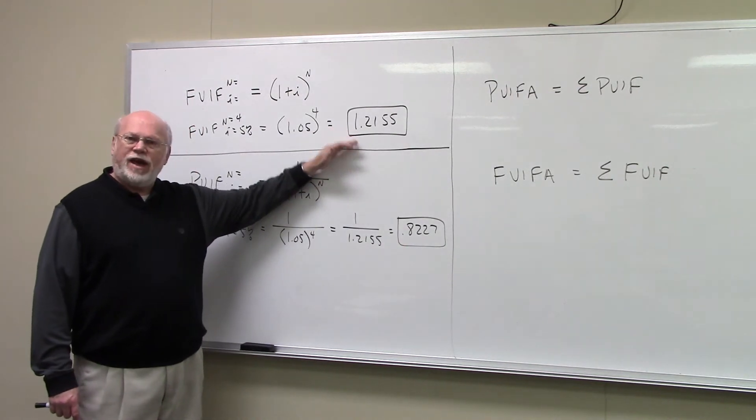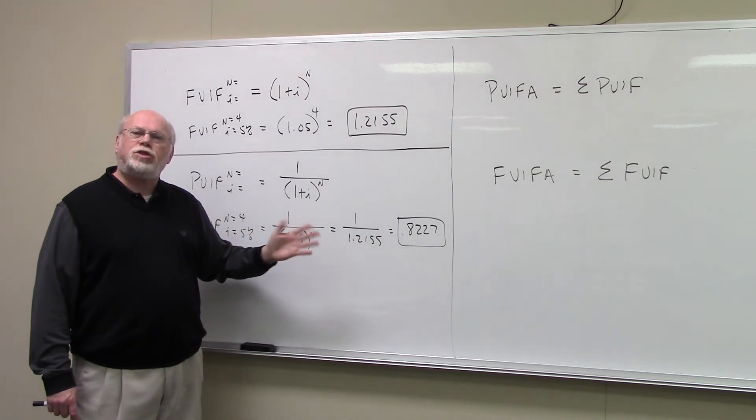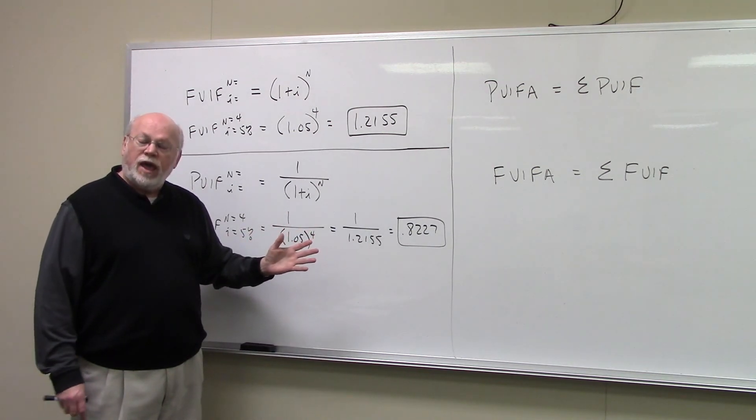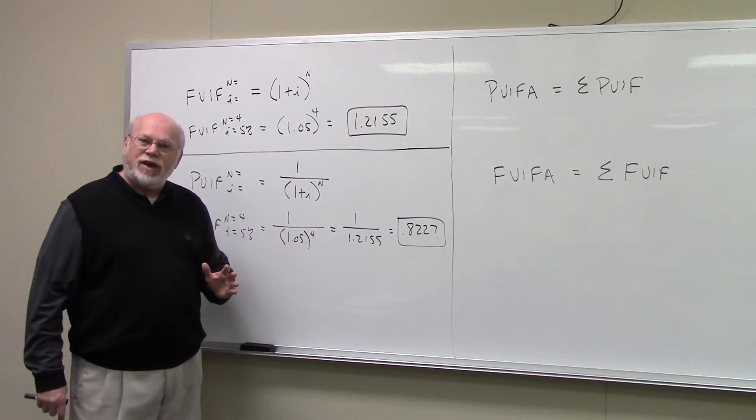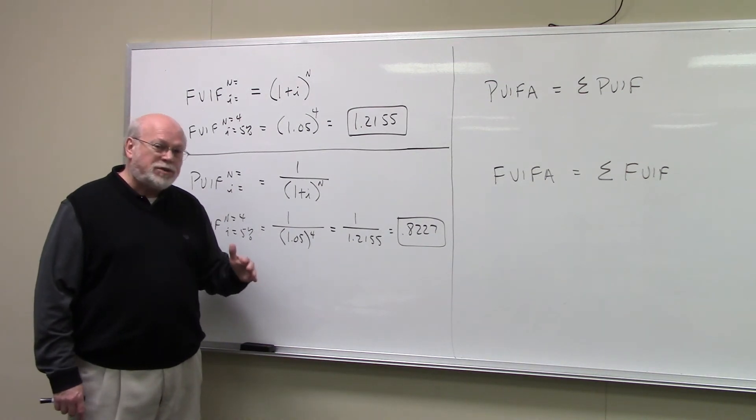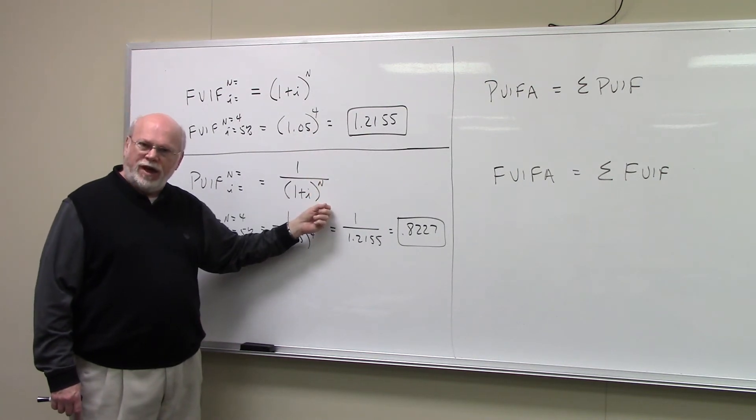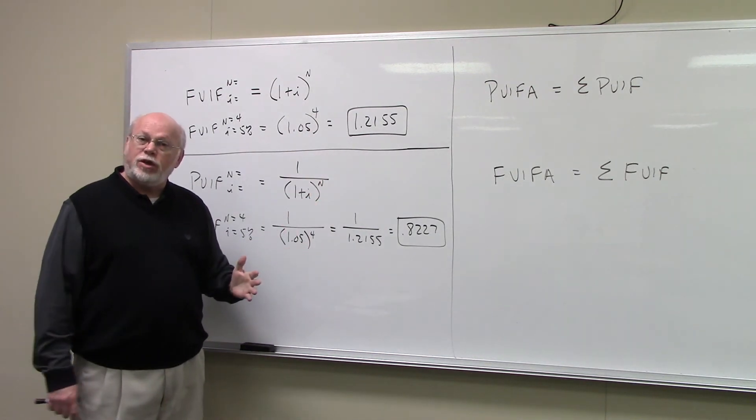Again, your FVIF and your PVIF, what's the relationship between them? One's the reciprocal of the other. If you do enough time value of money stuff, you're going to figure out that you can solve any lump sum problem with either your FVIF or your PVIF. It just depends on how you look at it.